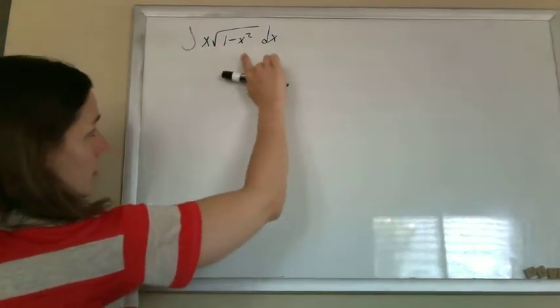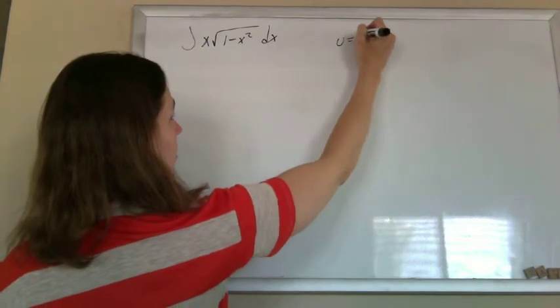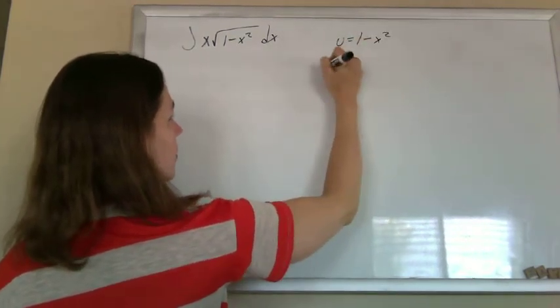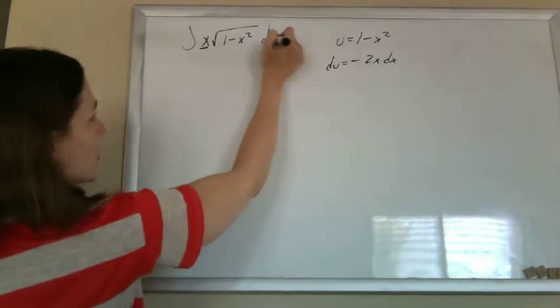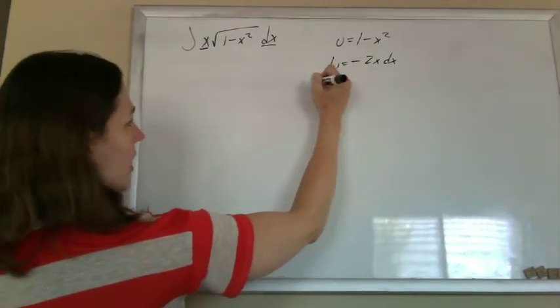Always look for a u-substitution first. I can make u equal 1 minus x squared, which makes du equal negative 2x dx. This is pretty much there, except for the negative one half.